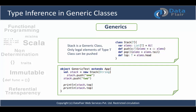We define an object named GenericTest that extends App — don't worry about that for now. Focus on how type inference is achieved: we define 'val stack = new Stack[String]'. While defining the value with reference name 'stack', we did not have to give the left-hand side a type annotation. In Java you would have to declare 'Stack stack = new Stack' with a type — here in Scala we achieve more conciseness.